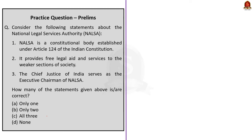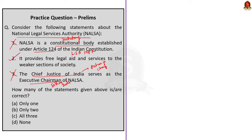Question 2 is about the National Legal Services Authority. Statement 1 — NALSA is a constitutional body established under Article 124 of the Indian Constitution: Incorrect — it is a statutory body constituted under the Legal Services Authorities Act 1987. Statement 2 — It provides free legal aid and services to the weaker section of society: Correct. Statement 3 — The Chief Justice of India serves as Executive Chairman of NALSA: Incorrect — the Chief Justice is patron-in-chief; a sitting judge of the Supreme Court is appointed as Executive Chairman. So the correct answer is option A — only one statement is correct.